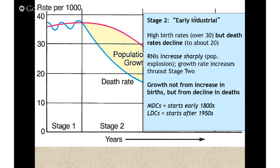Stage two is called the early industrial stage. You have very high birth rates and death rates that are beginning to drop. The reason is that in stage two, there are advances in medicine — medicine comes along and cures measles, or finds a vaccine, reducing the death rate. In the modern world, this would be London in the late 1700s and early 1800s, where you have a population boom because people came up with cures for certain types of diseases, and so people began living longer.